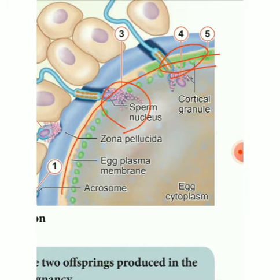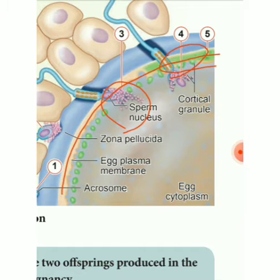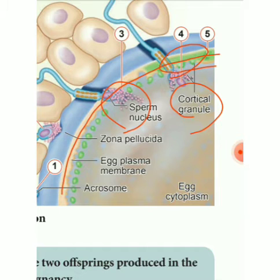Why does it create a fertilization membrane? Because millions of sperms enter the isthmic region at one time of ejaculation. Only one sperm connects to the egg; other sperms are not able to connect. This is stopped with the help of cortical granules. The cortical granules prevent penetration of other sperms — thus polyspermy is prevented.